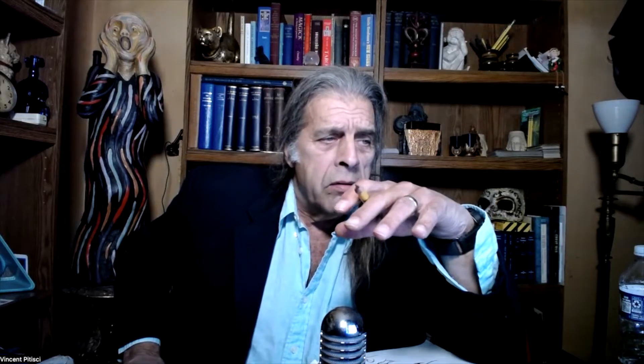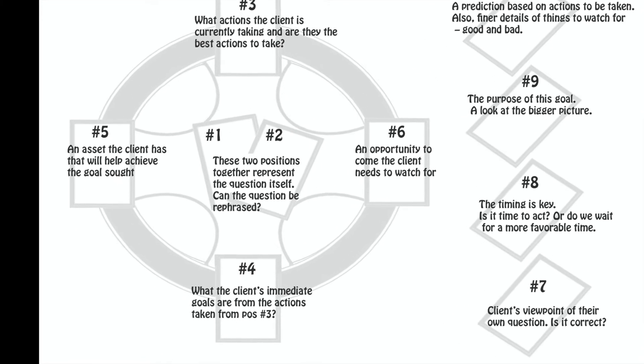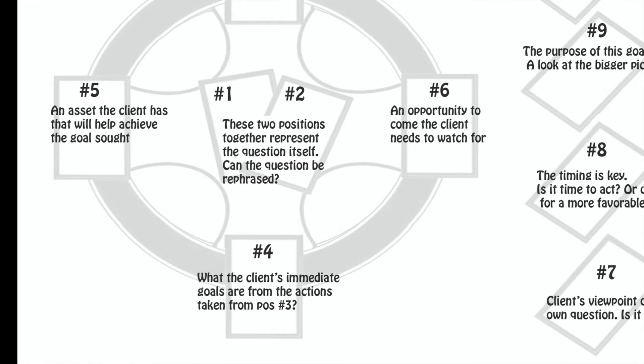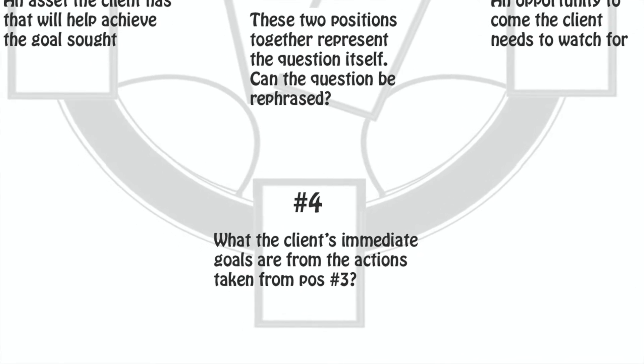Position four looks at the client's immediate goals based on the actions taken in position three. So they're doing some immediate actions in position three to accomplish something in position four. Maybe the things they're doing in position three won't get them to position four, or there might be better ways to do that. It also allows us to ask: is this really what the client wants right now as an immediate goal, or is there a better goal that can be fine-tuned or adjusted?